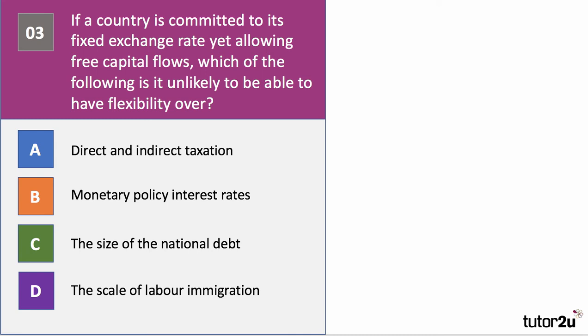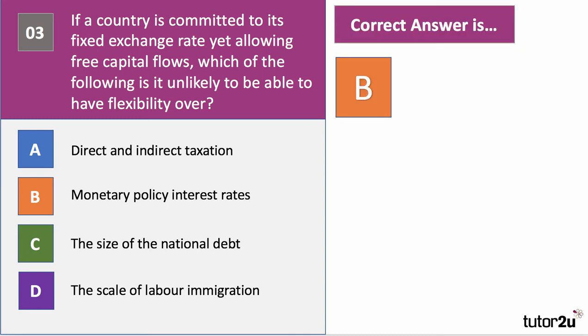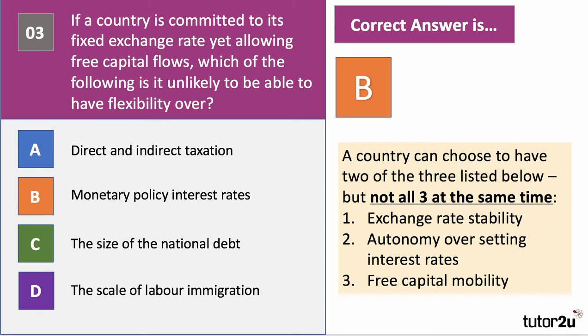The right answer to question three is B — interest rates. This relates to the macroeconomic trilemma: a country can have two of the following three things — exchange rate stability, free capital mobility, and independent monetary policy — but not all three simultaneously. If a country wants exchange rate stability and free capital mobility, it doesn't have freedom over interest rates. The UK chose a floating exchange rate, sacrificing exchange rate stability but retaining freedom to set interest rates for domestic objectives and maintaining capital mobility.